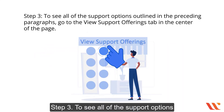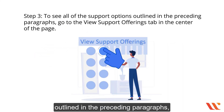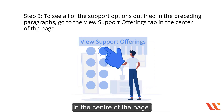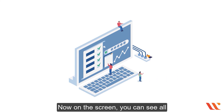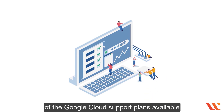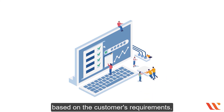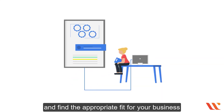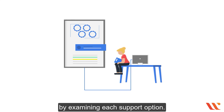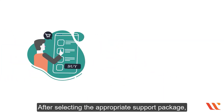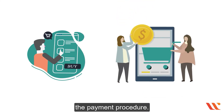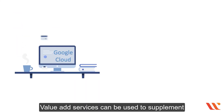Step three: to see all support options, go to the View Support Offerings tab in the center of the page. On screen you can see all Google Cloud support plans available based on the customer's requirements. You can plan according to your workload and find the appropriate fit for your business by examining each support option. After selecting the appropriate support package, click the Buy Now button to complete the payment procedure.